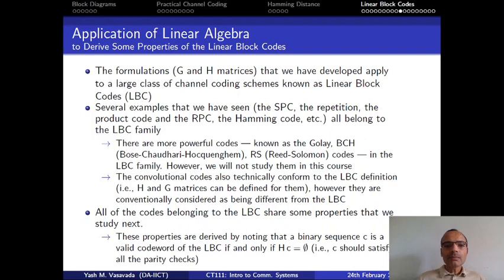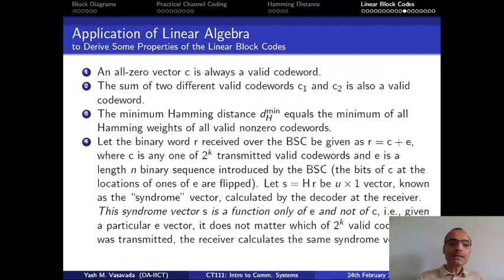Okay, so let us now consider the properties of the linear block codes. They are listed here, some of the properties are listed here. This is not the entire list of all the properties that they have. But these properties are as follows. First property is that no matter what specific channel coding scheme it is, if it is a linear block code, then all zero vector is always a valid code word. This is the first property.